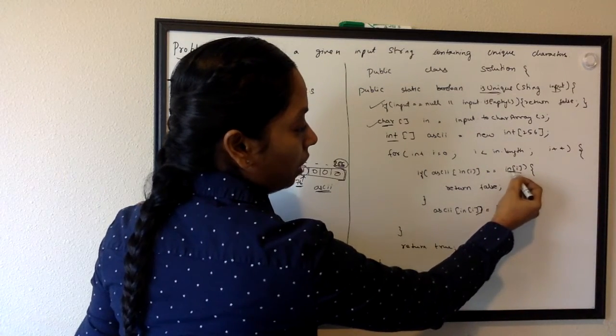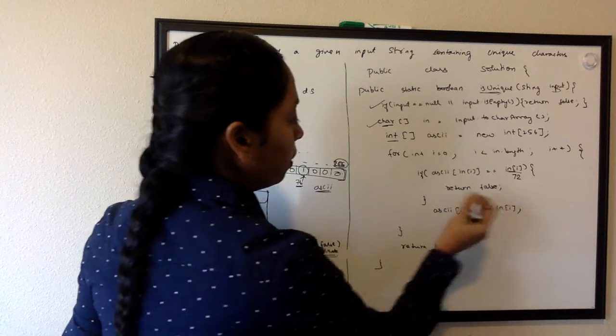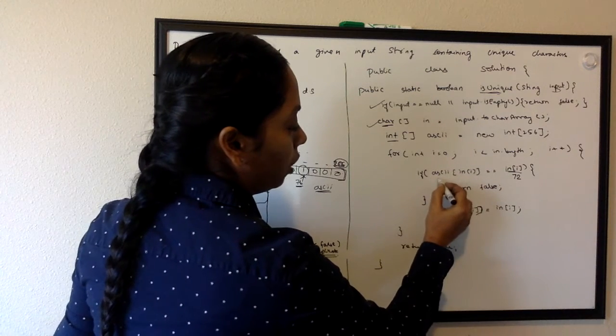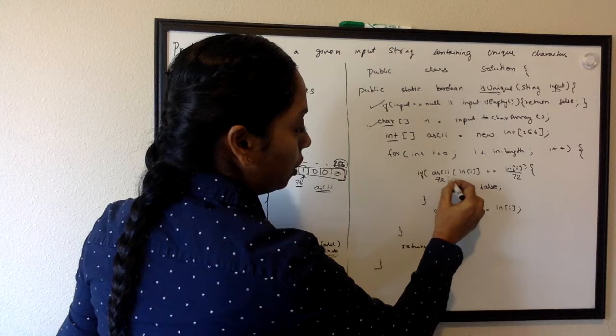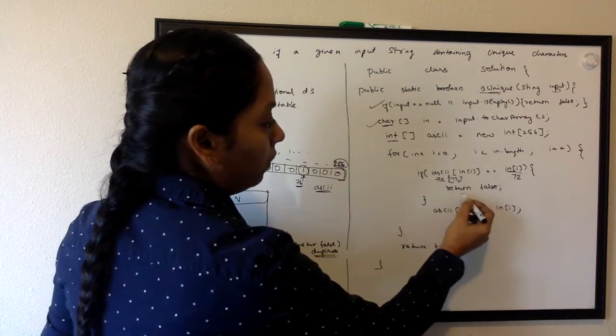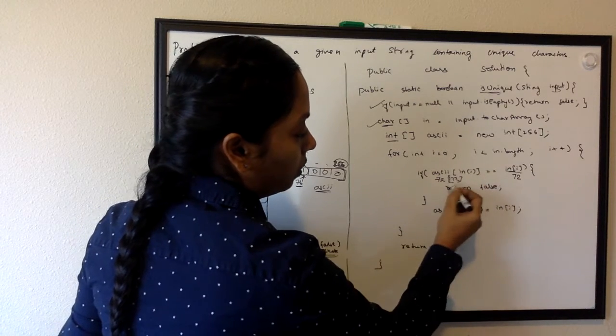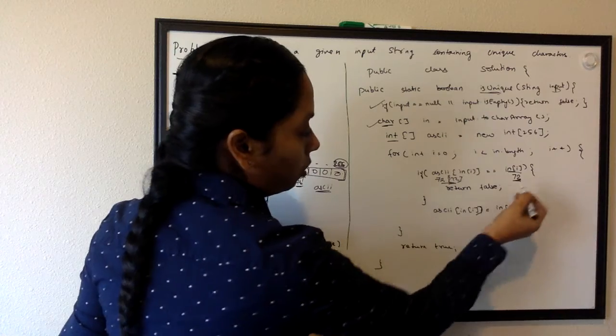Here I'm saying input[i] - when you say whatever the character, it is always in the int form, the decimal value. If you say this is a decimal value for H, it would be 72, so in position 72 we are going to input the value 72.